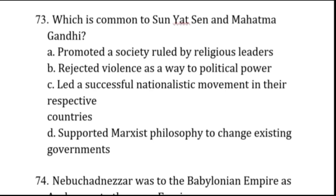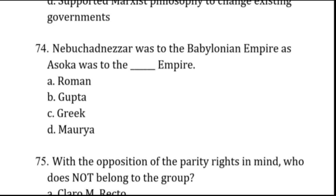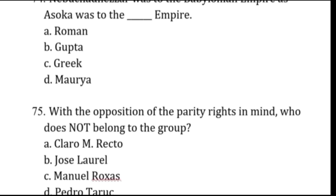Nebuchadnezzar was to the Babylonian Empire as Asoka was to the Mauryan Empire. Asoka was the grandson of Chandragupta Maurya, the founder of the Mauryan Empire or dynasty of India. That's letter D.